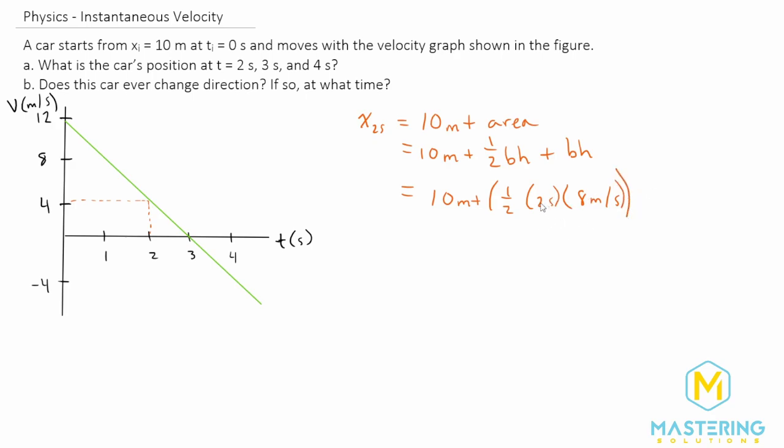So doing quick mental math, 2 times 8 is 16, and one-half of that is 8, so this whole value will be 8. And then we need to add the area of the rectangle, which is a 4 for the height and a 2 for the base. So 2 seconds times 4 meters per second.